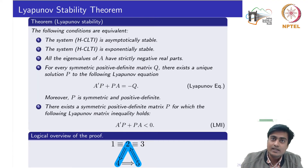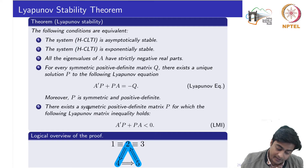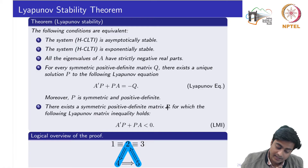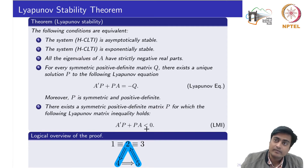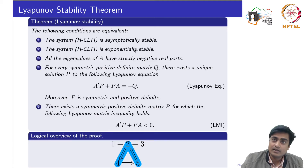Now we will see the implication 5 implies 2. The statement of 5 says that we are already provided with the information that there exists a matrix P which is symmetric and positive definite satisfying this equation. What we need to prove is that having P satisfying this equation implies that the system is asymptotically stable or exponentially stable.